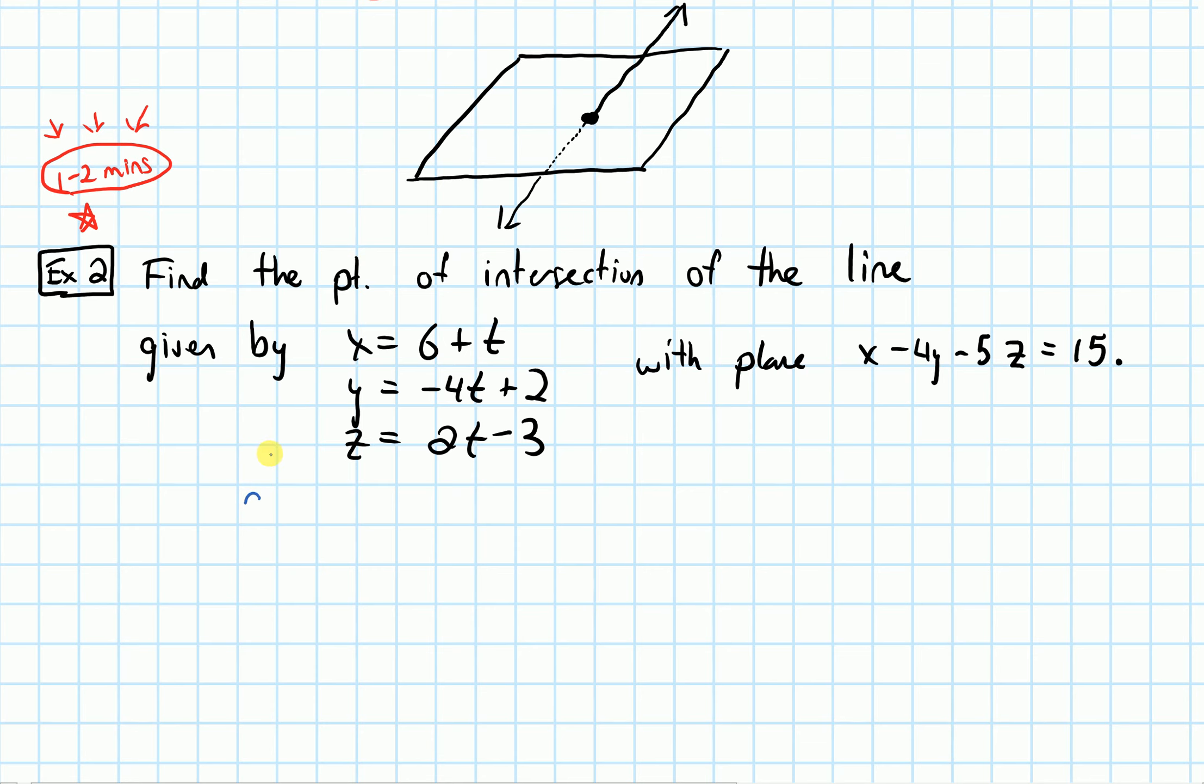We are going to use an idea from algebra when we found intersections of two things, which is we're going to take one equation, or in this case a set of equations, and substitute into the other. So we are going to substitute. Specifically, we know what x and y and z are equal to from the line equations, and plug those into the plane.